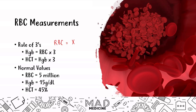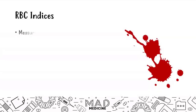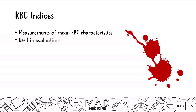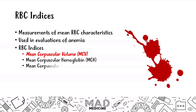Now we're going to talk about something called red blood cell indices. Indices are measurements of your mean red blood cell characteristics. The main red blood cell indices you need to know are your MCV — mean corpuscular volume — your MCH — mean corpuscular hemoglobin — and your MCHC — mean corpuscular hemoglobin concentration.